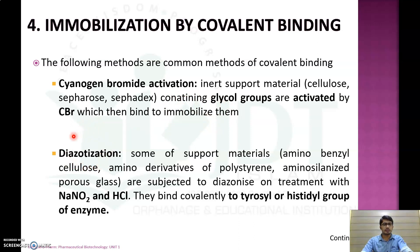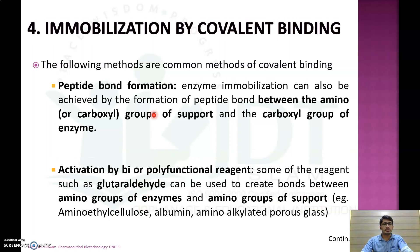The second method of covalent bonding is diazotization. Support materials like aminobenzyl cellulose, amino derivatives of polystyrene, or aminosilanized porous glass are subjected to diazotization treatment with sodium nitrate and HCl, whereby they can bind covalently with the tyrosine or histidyl groups of the enzyme.